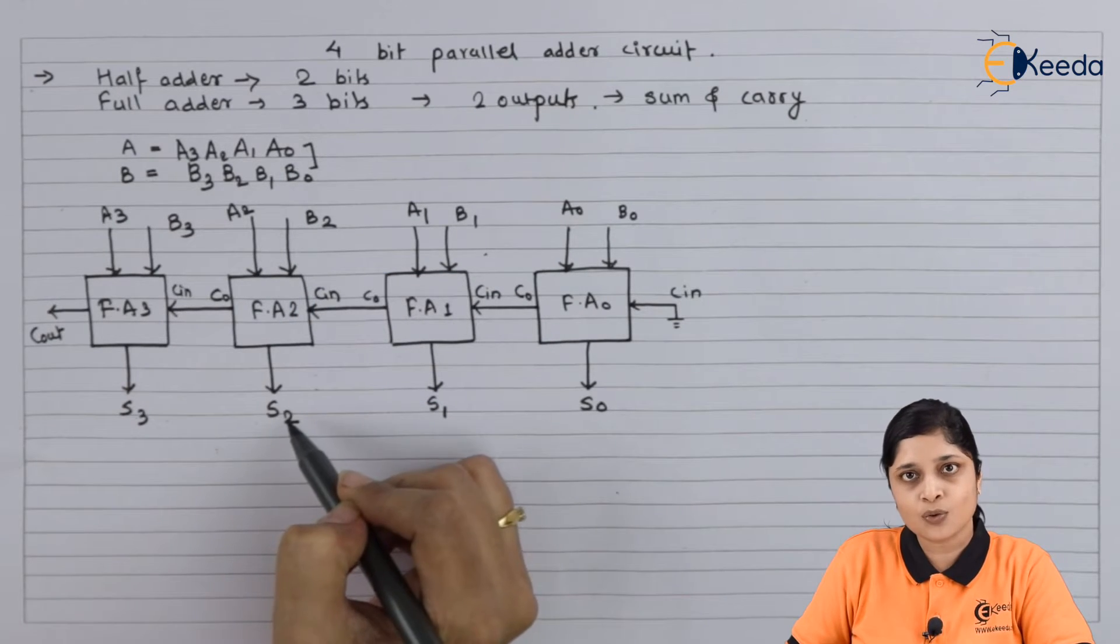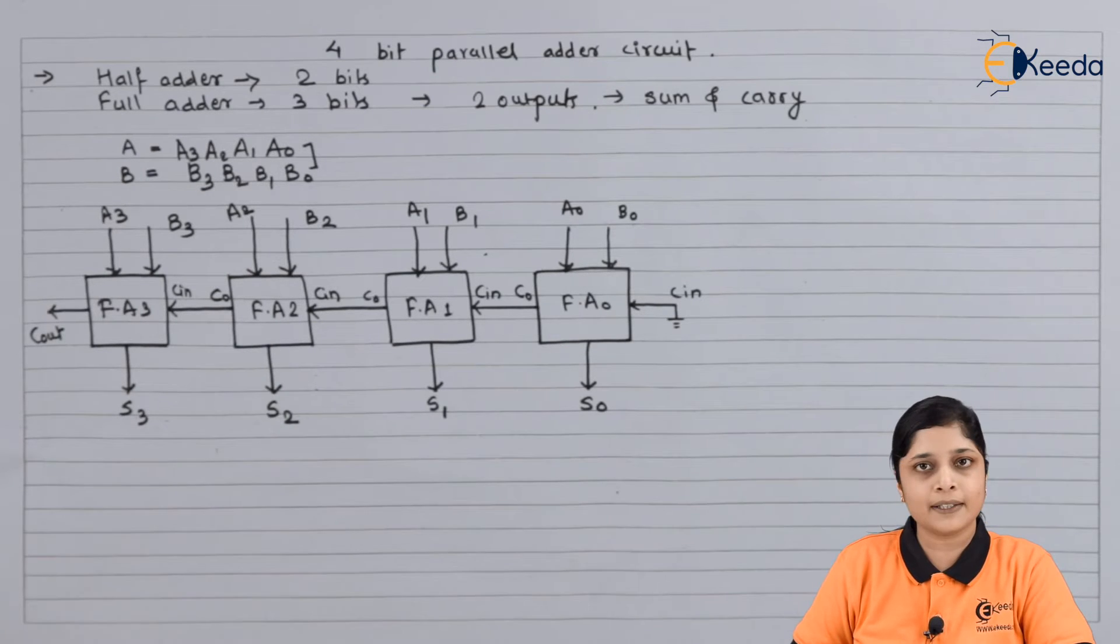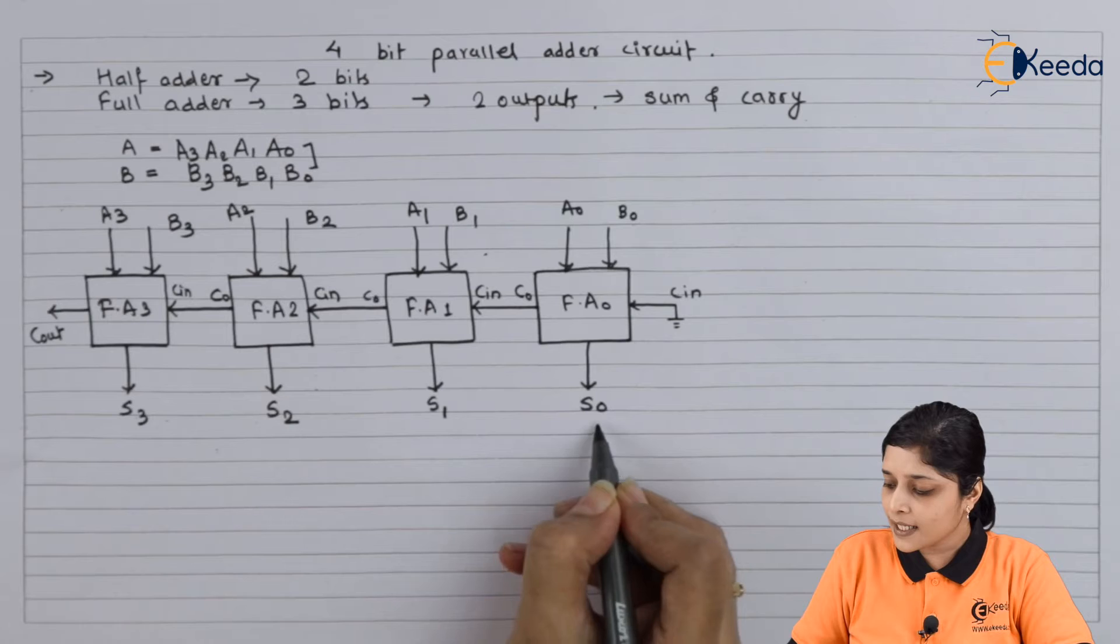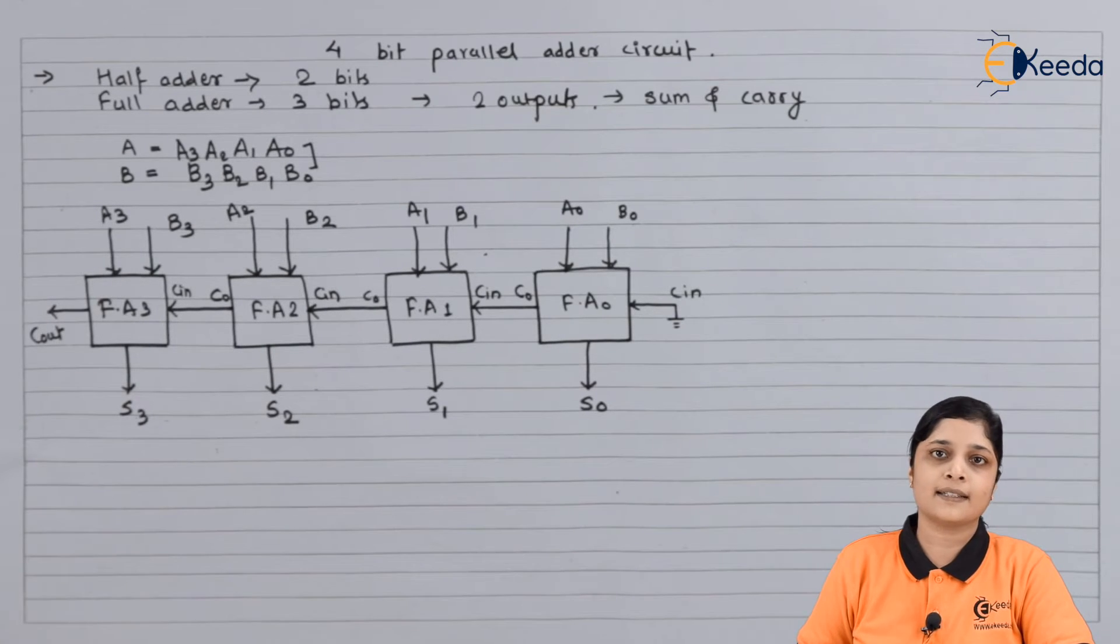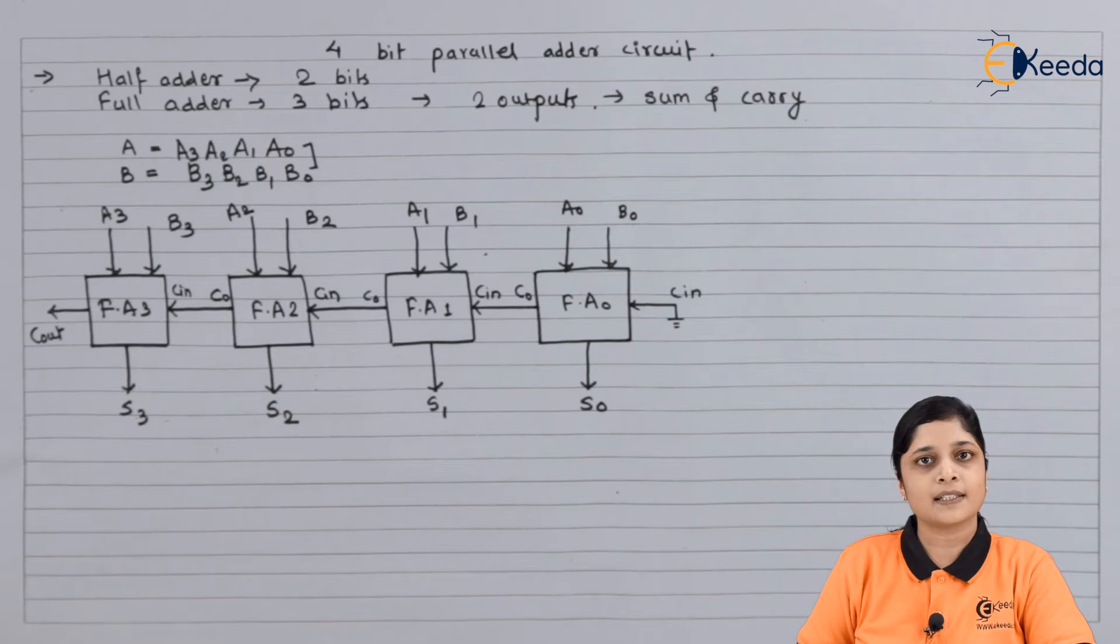Here C0, S2 are the outputs. In this way you have to make cascading connections and you have to design a 4-bit parallel adder. Finally, S0, S1, S2, S3 give you the final answer for sum, and C_out will give you the final answer for carry.